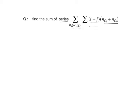To solve this, we use the sigma property: sigma r=0 to n of f(r) equals sigma r=0 to n of f(n-r). This summation is the same series added in reverse order, so these two are equal. Using this property, assume S equals sigma sigma, where 0 ≤ i < j ≤ n, of (i+j)·nCi·nCj.